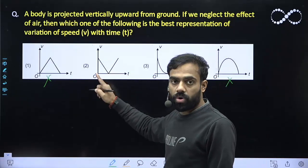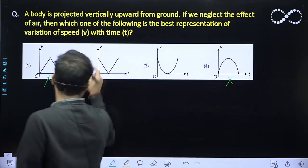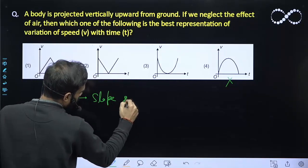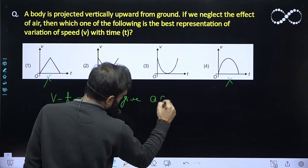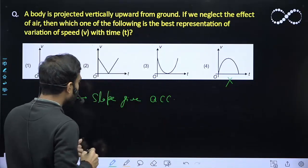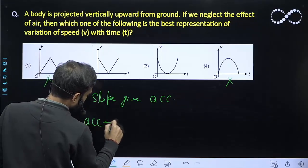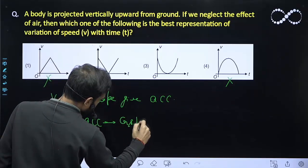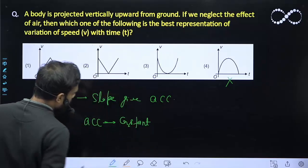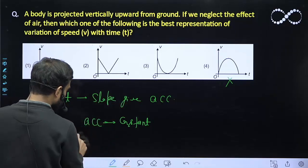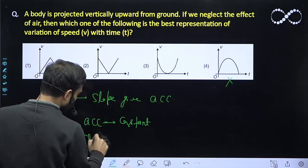So since the acceleration is constant, in the case of Vt graph, the slope gives acceleration. And as you all know, in the free fall acceleration is constant. So from these two relations, slope gives acceleration, acceleration is constant. From these two statements I can conclude the slope must be constant.